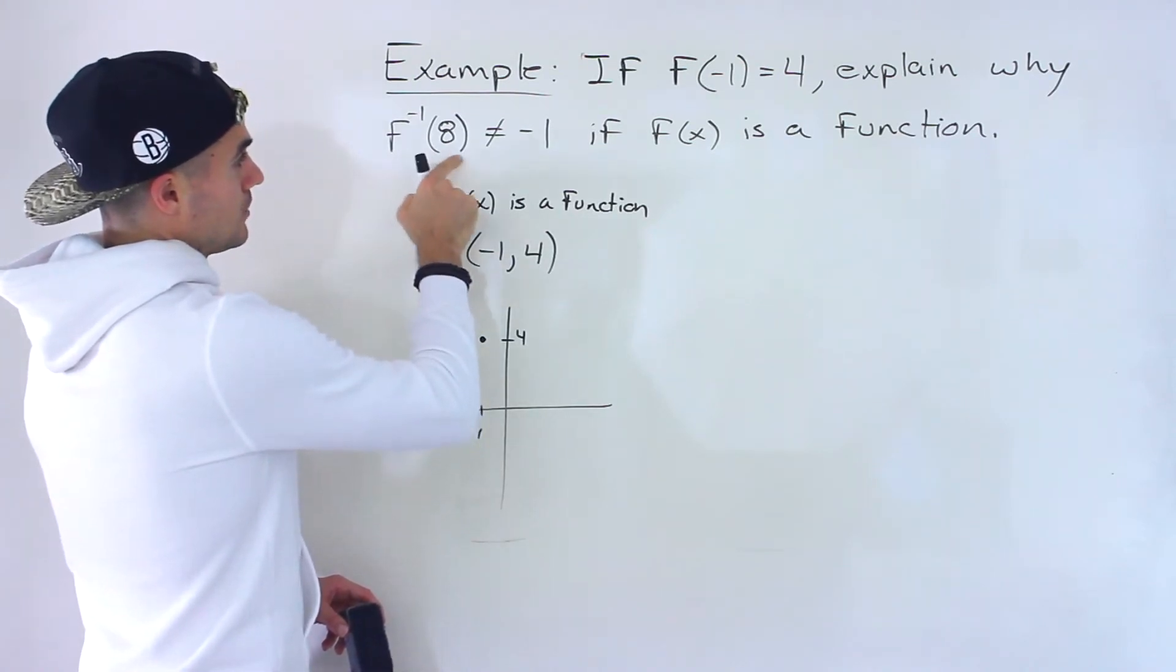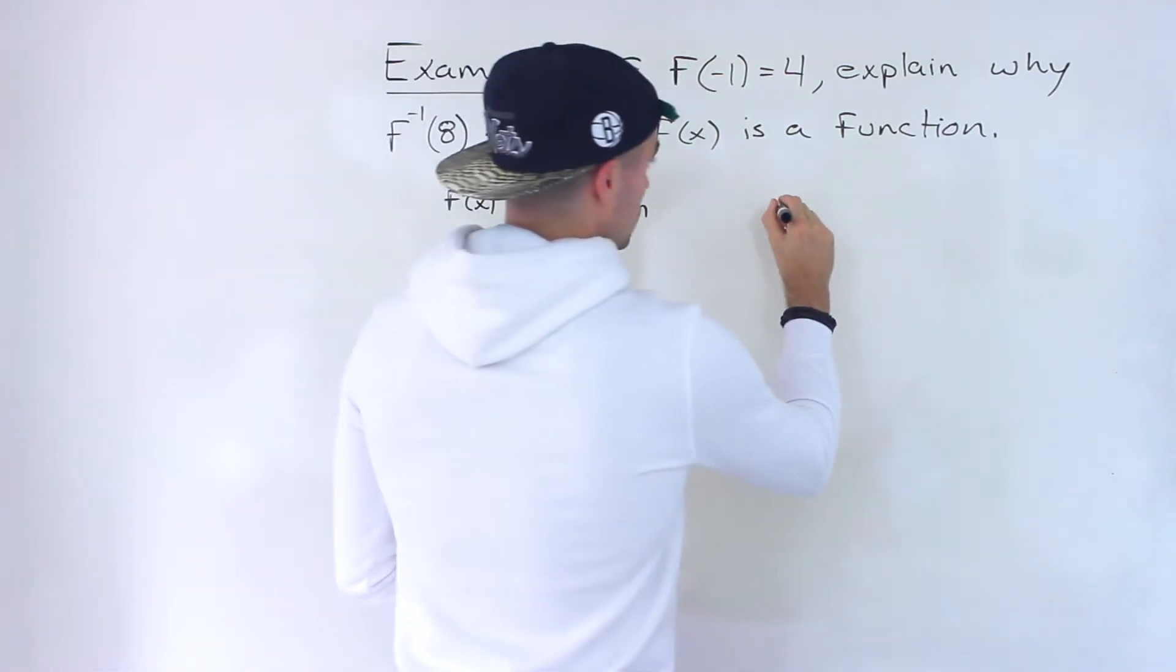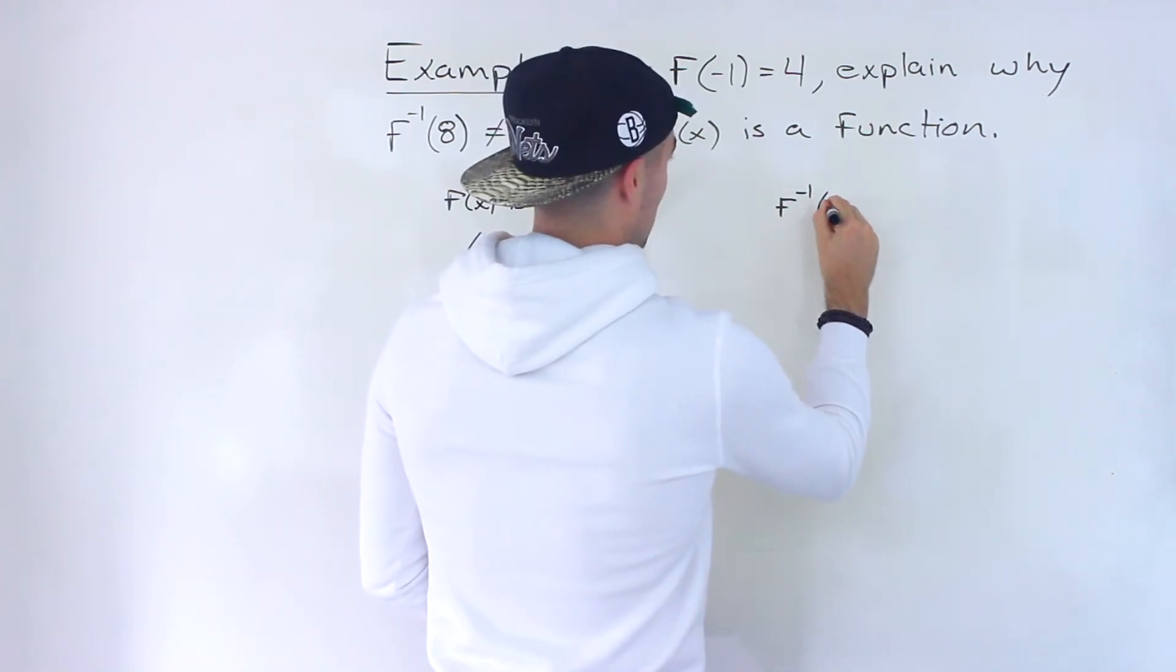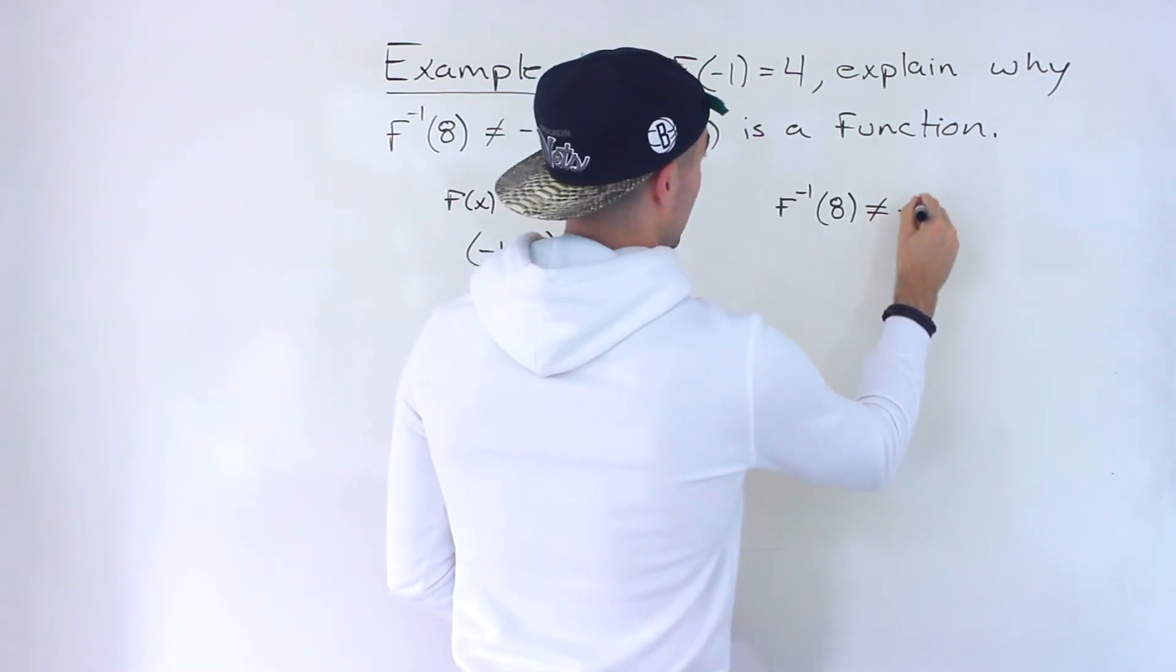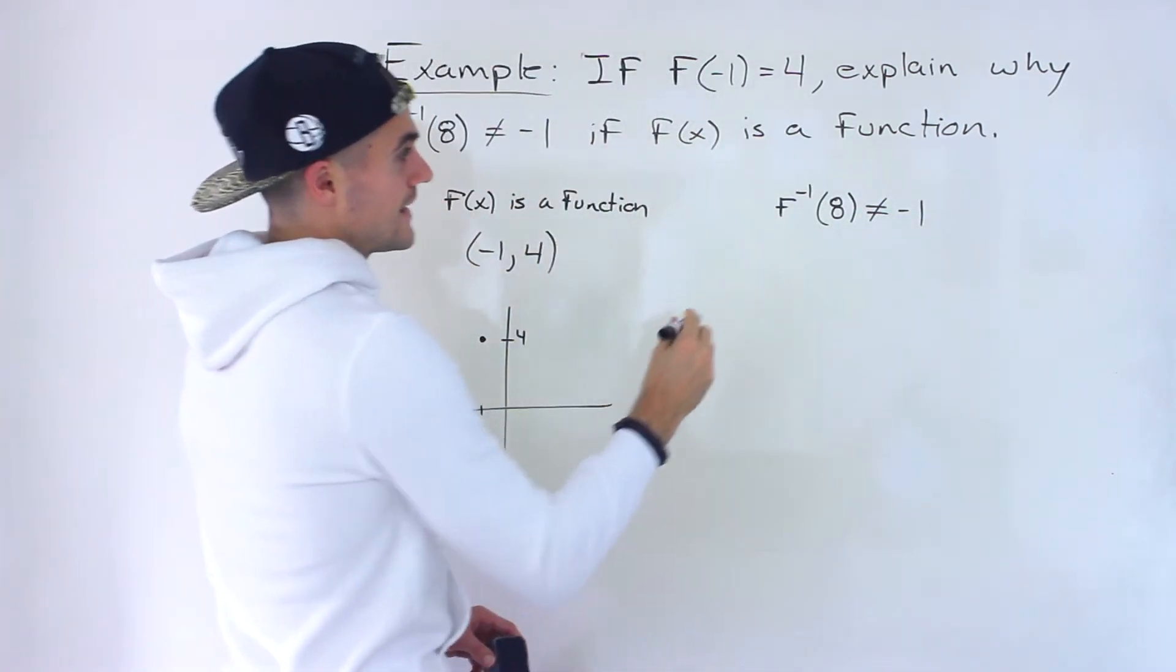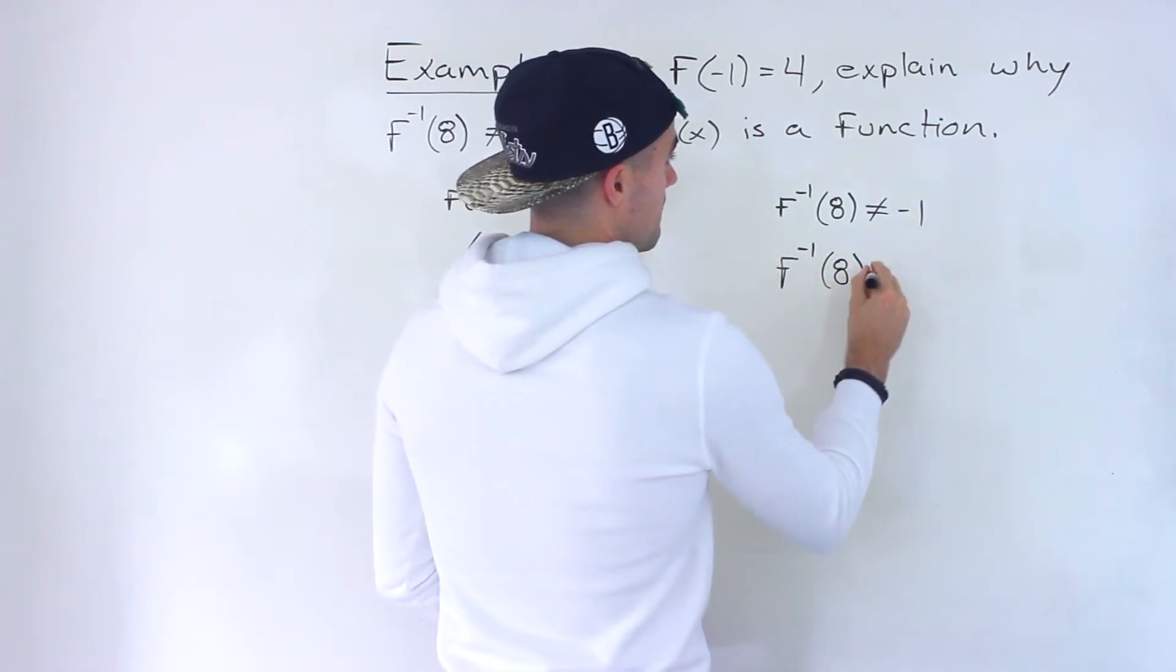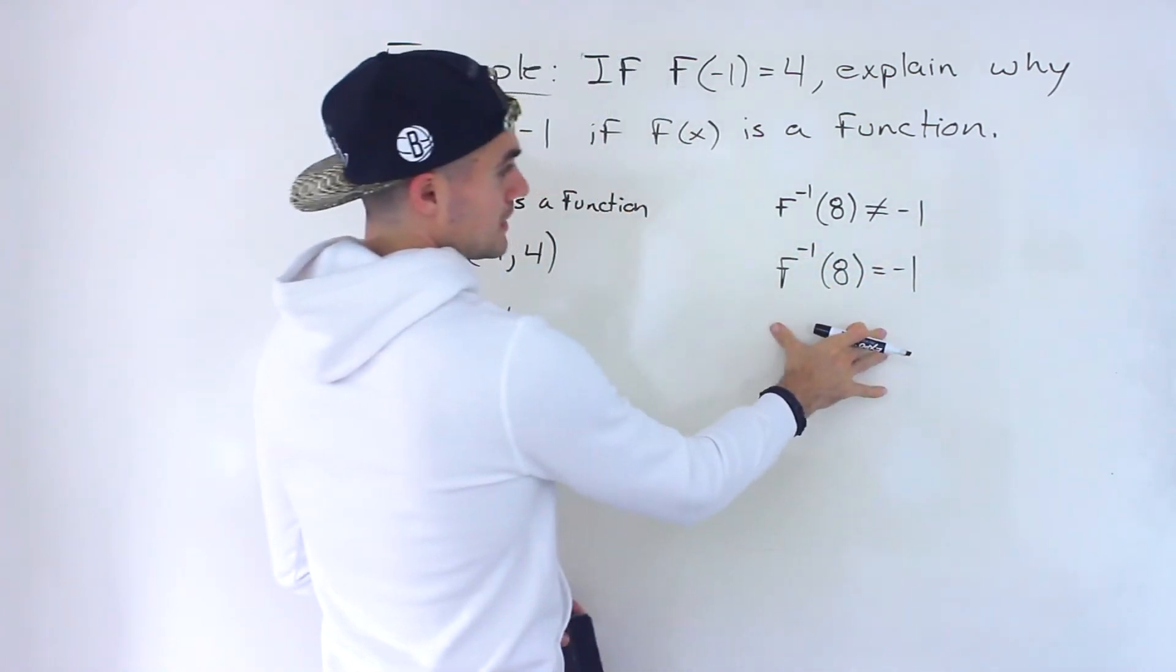And then notice how we're told that the inverse at an x value of 8 cannot equal negative 1. Now let's say that it did equal negative 1, so let's just assume that. What does this mean here?